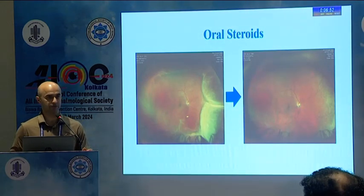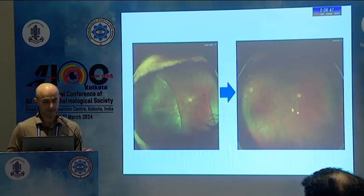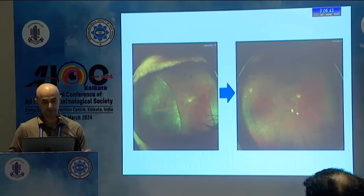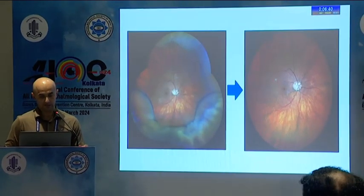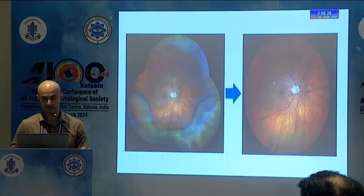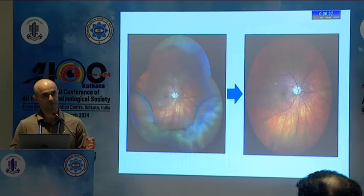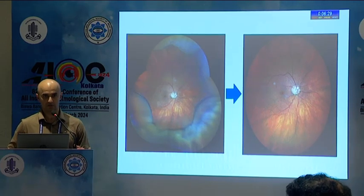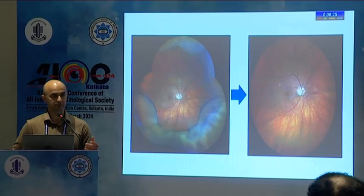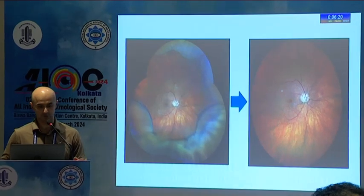A post-trabeculectomy patient developed hypotony and oral steroids did their job. Another patient with extensive choroidal effusion was treated with similar oral steroid treatment and did well. Even almost 360-degree choroidal effusion works quite well with oral steroids. Don't shy away even if you see kissing choroidals — allow the oral steroids to take effect and don't jump into draining serous choroidal effusion, because draining in another hypotonic eye means another chance of effusion.